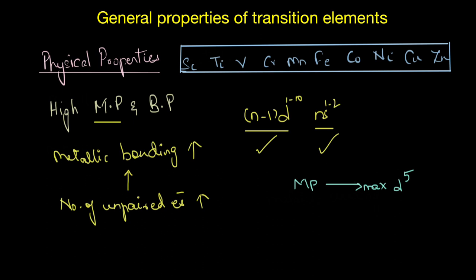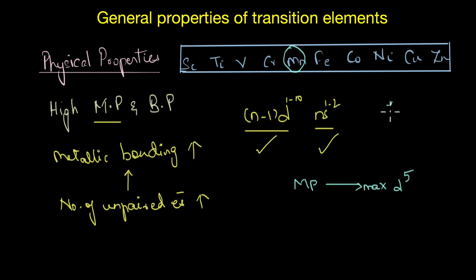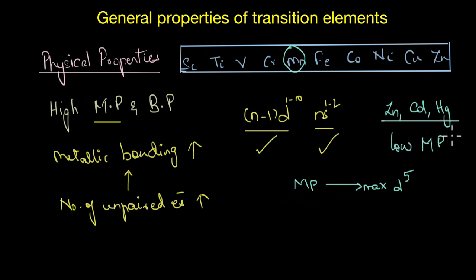Thus, greater the number of valence electrons, stronger is the metallic bonding. The only exception in the 3d series is manganese — despite having a d⁵ configuration, manganese has an unexpectedly low melting point. The other exceptions in the d-block are zinc, cadmium, and mercury. All of these have much lower melting points than the others because they have completely filled d sub-shells and do not have any unpaired d electrons to maximize interatomic interaction.